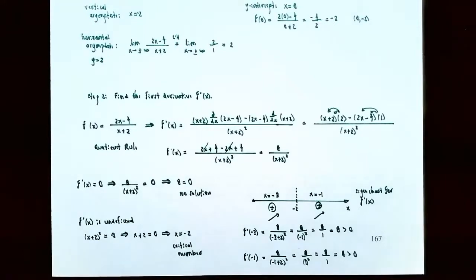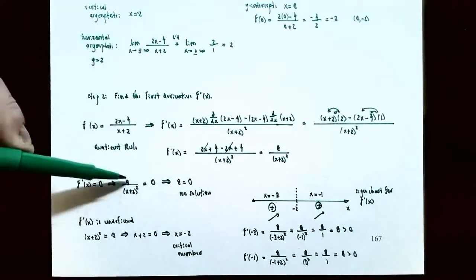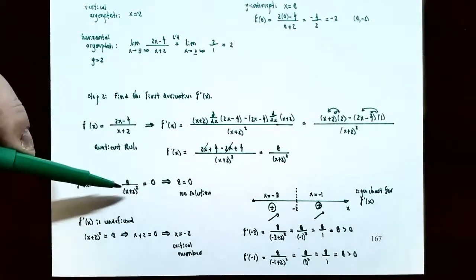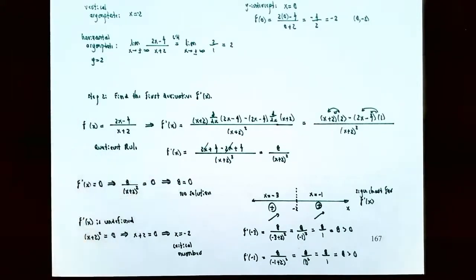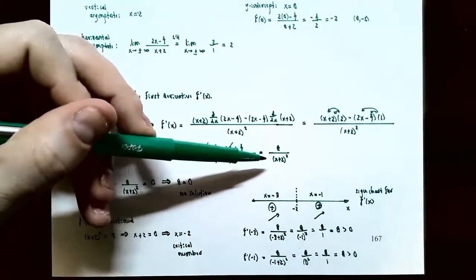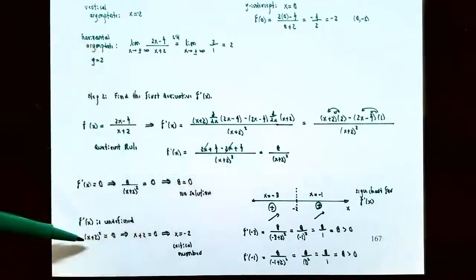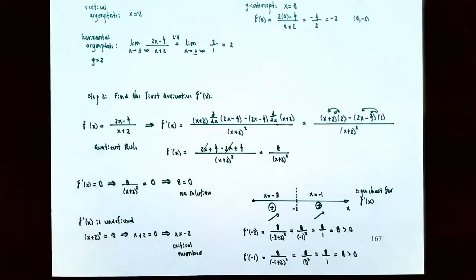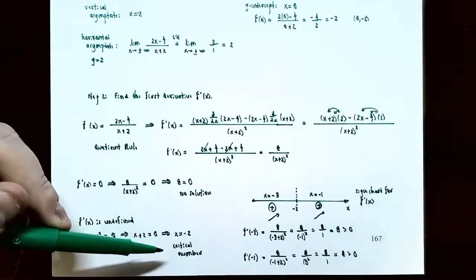To find critical numbers: f'(x) = 0 gives 8 = 0, which has no solution — no critical numbers there. f'(x) is undefined when (x+2)² = 0, giving x = −2. So x = −2 is the only partition number on the sign chart for f'(x).